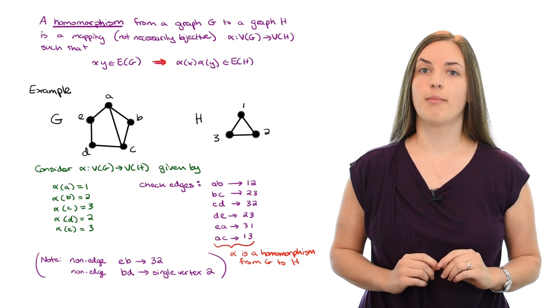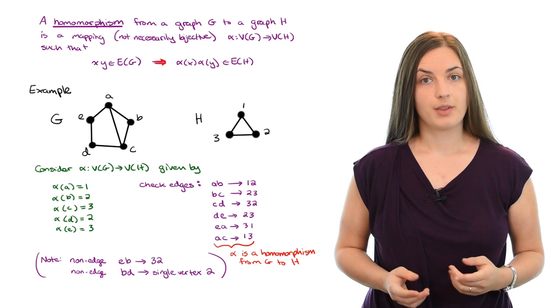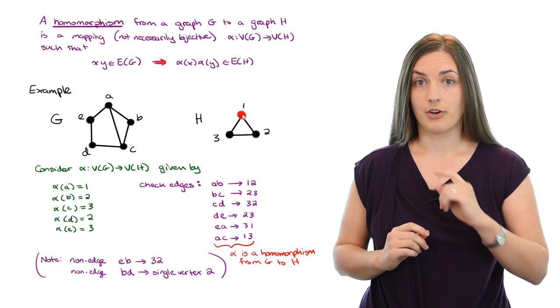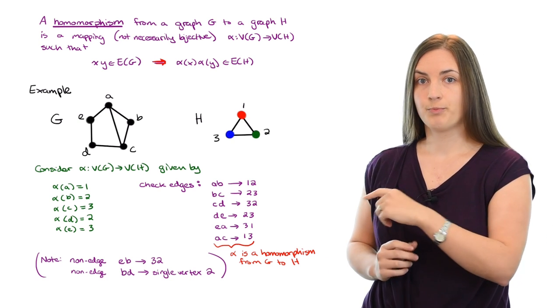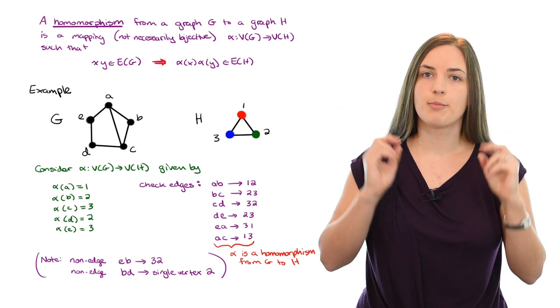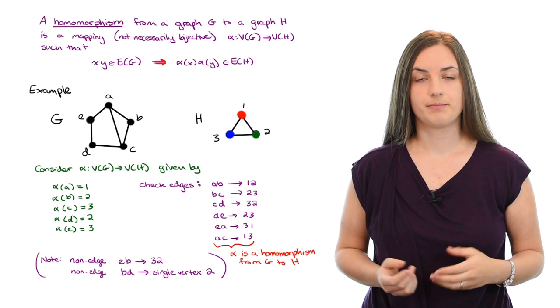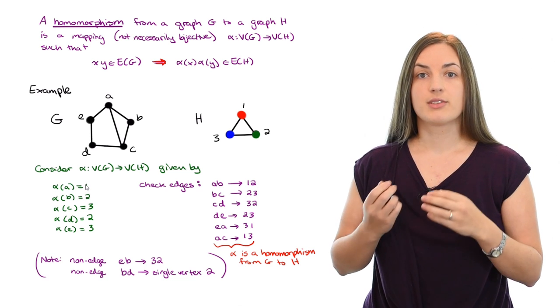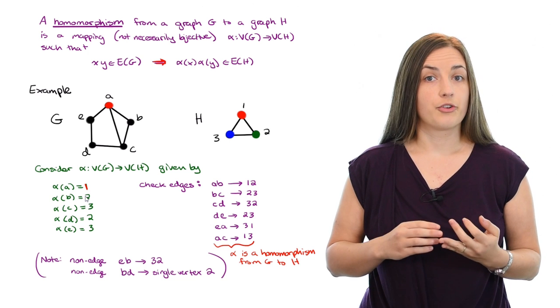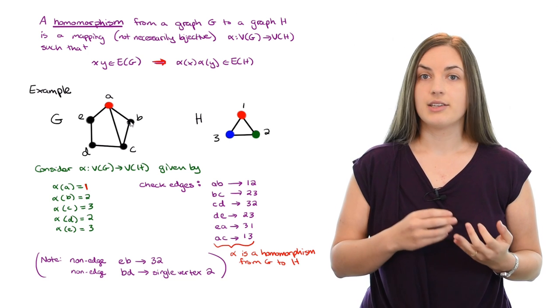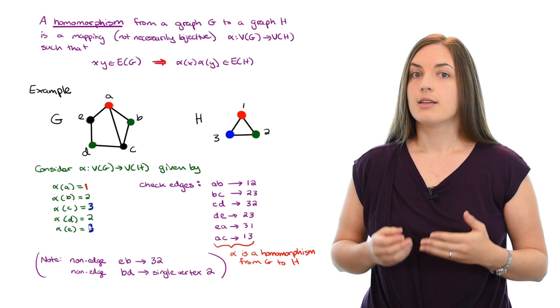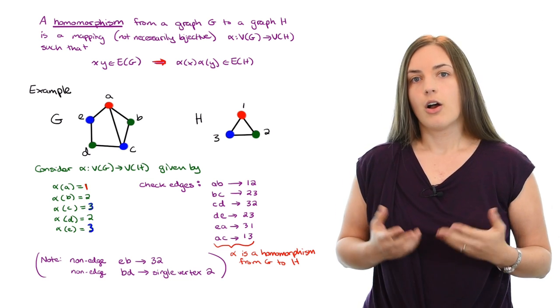Finally, I'd like to make a remark about coloring. If we think about the vertices of H as being coloured with red, green and blue, let's see what the map alpha would tell us in terms of the corresponding colours in the graph G. Well, alpha maps A to 1, so we colour that guy red. And then the ones coloured green are going to be B and D. The ones coloured blue are going to be C and E. Okay, so basically our map alpha told us how to colour the graph G.